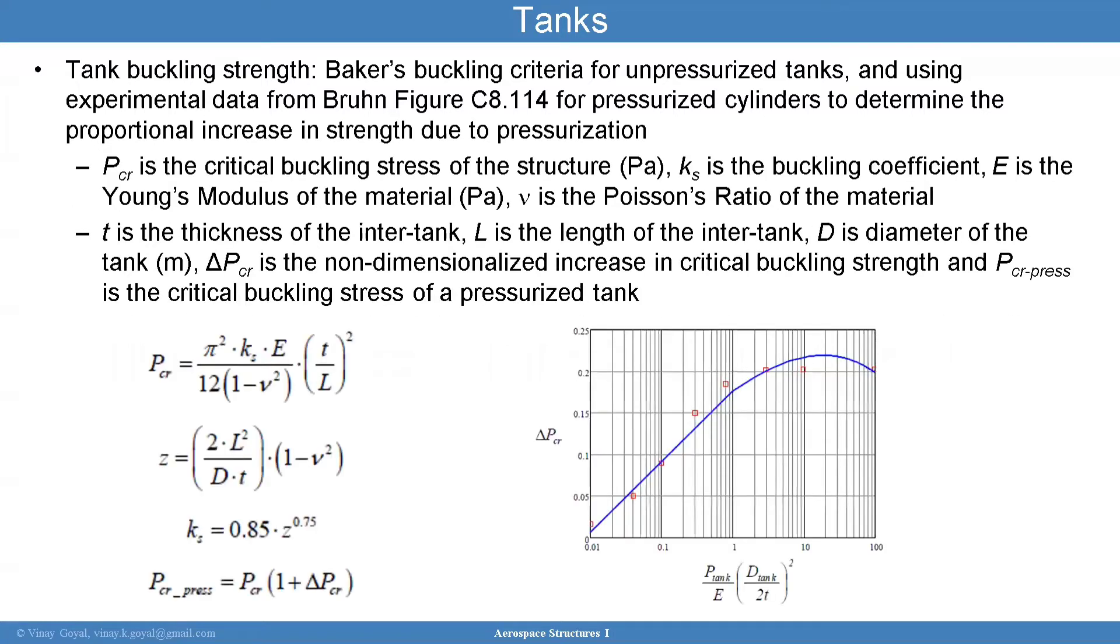The critical buckling load is given as a buckling stress P critical. This buckling stress is calculated using the modulus of the material. Ks is a buckling coefficient. ET is the wall thickness and L is the length of the tank and nu is Poisson's ratio. This is how you calculate your P critical.